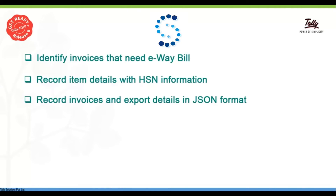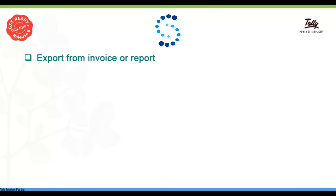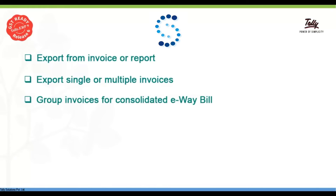If we miss it, we will be able to identify the invoice. If we miss the invoice, we will be able to identify the invoice. When we export the JSON file, we can export the invoice. When we export a single invoice, we can track all invoices.